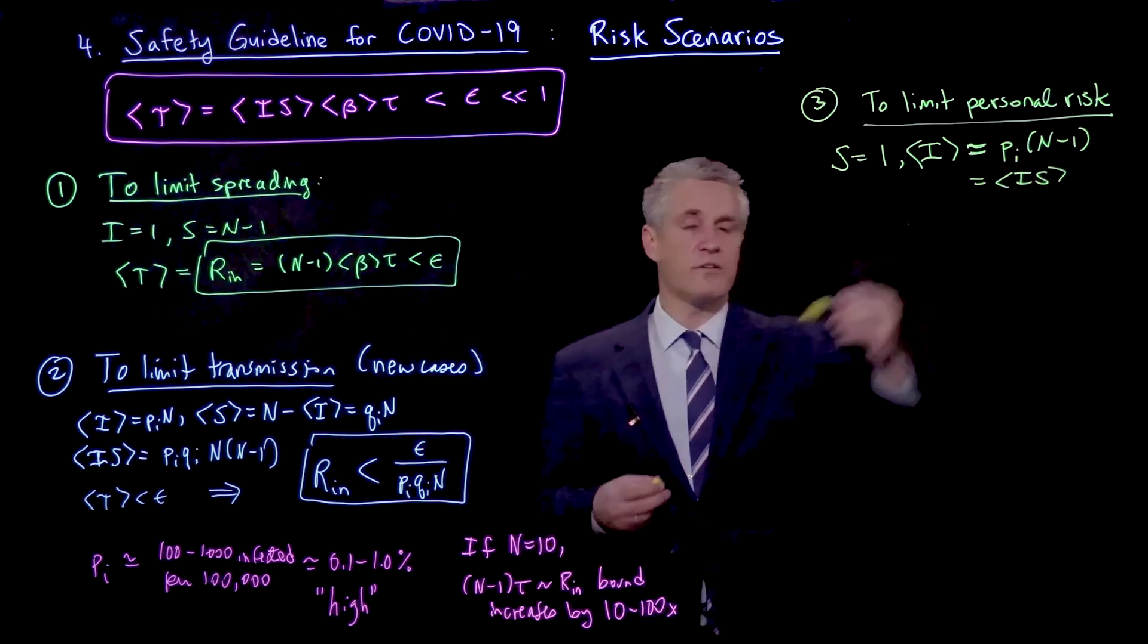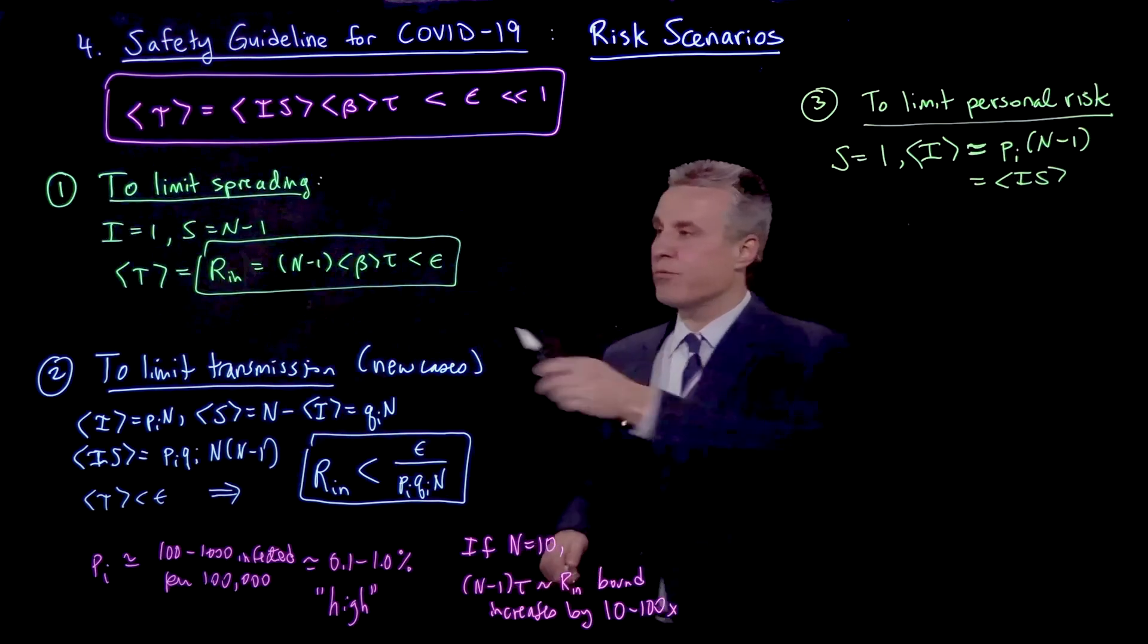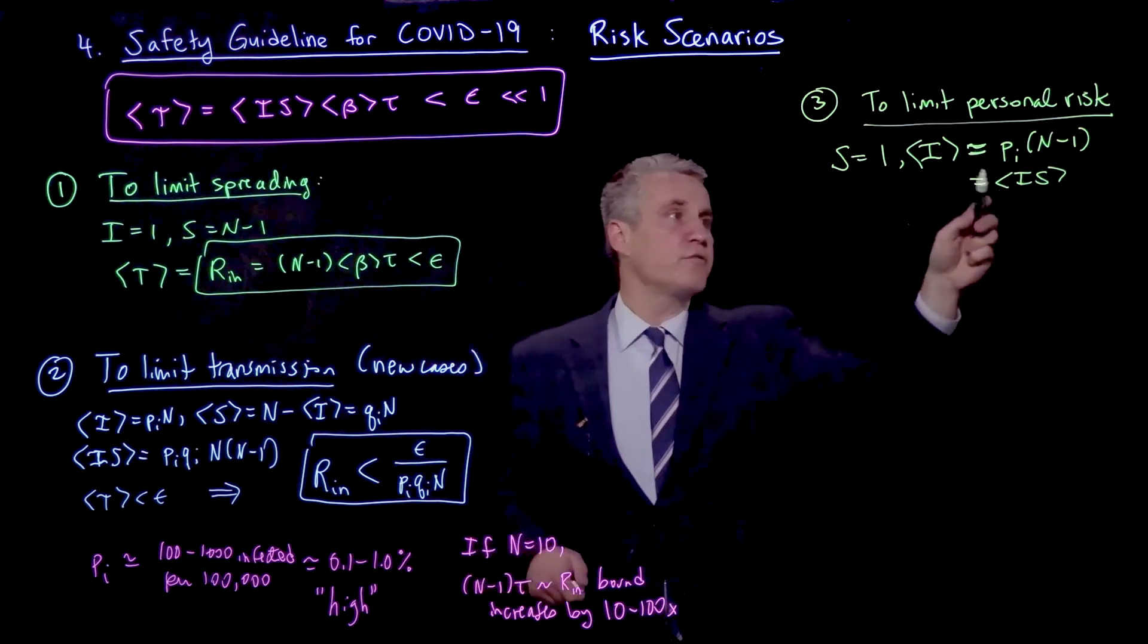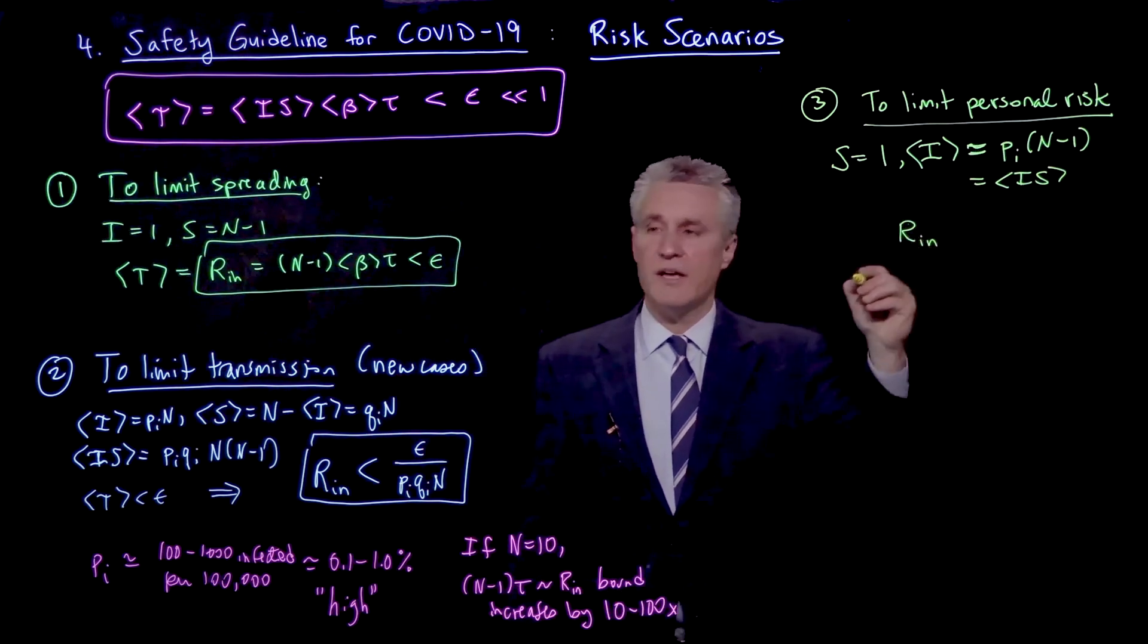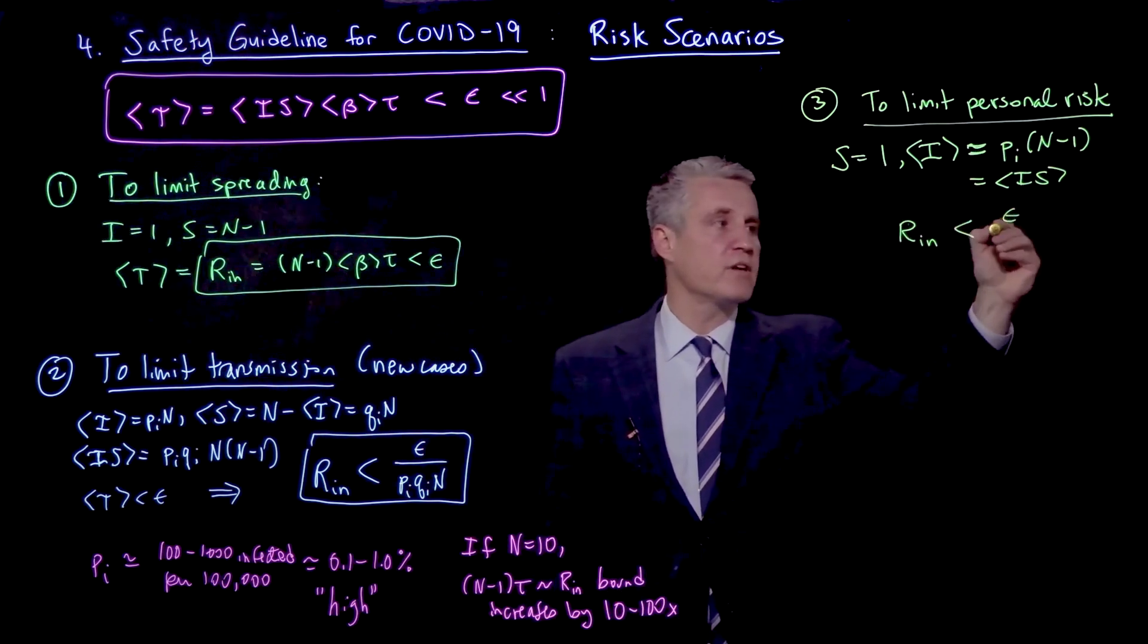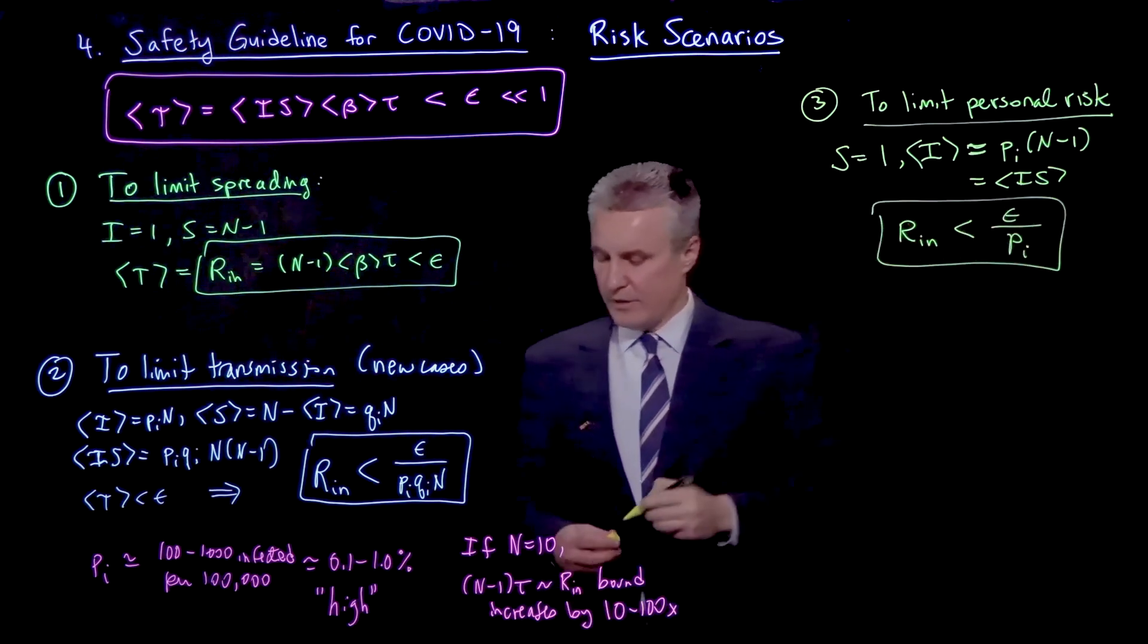So my transmission rate now has this factor. And notice in this case we get the same N minus 1 as before, but there's this new factor of pi here. So that then tells me I could express the bound as the indoor reproductive number is less than epsilon divided by pi.